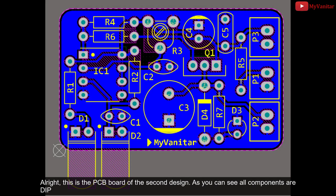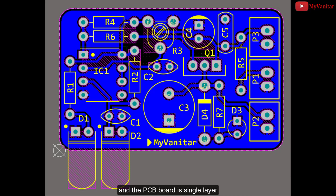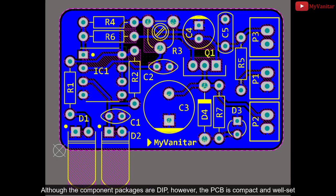All right, this is the PCB board of the second design. As you can see, all components are DIP and the PCB board is single layer. Although the component packages are DIP, however the PCB is compact and well set.